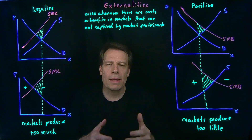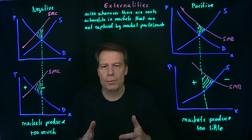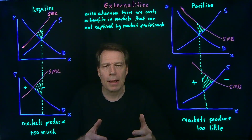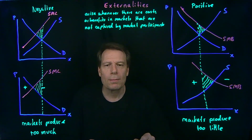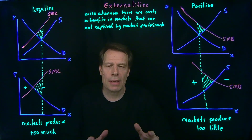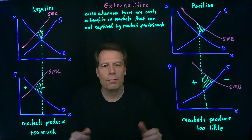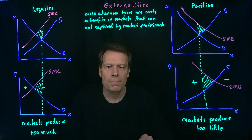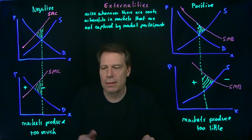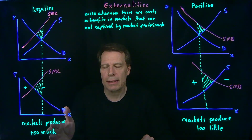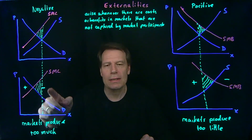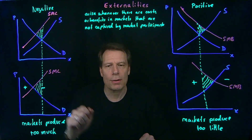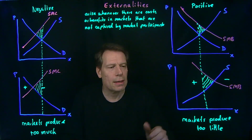So when there are costs or benefits that are incurred by people outside of the market, we say that there are externalities. Those can be negative or positive. In one case, markets will end up producing too much, creating a deadweight loss. In the other case, markets produce too little, also creating a deadweight loss.